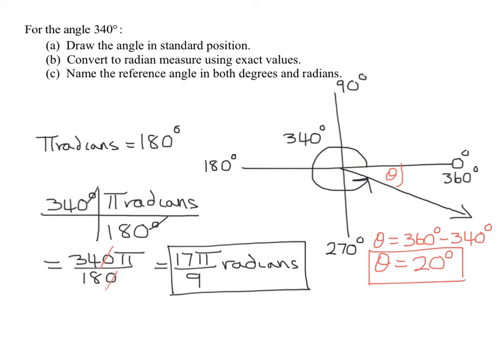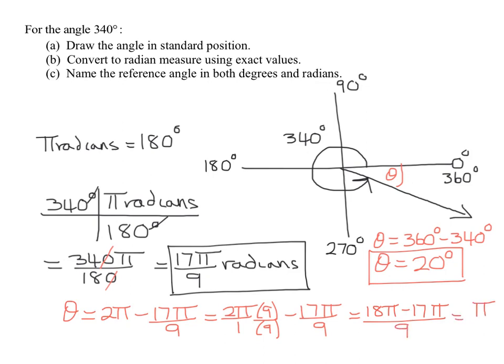And there's two different ways to find it in radians. Let's see if we can actually deal with fractions. One whole revolution is 2 pi. And we need to subtract the angle of 17 pi over 9. How are we going to do that? We need a common denominator. So we're going to have to multiply this by 9 over 9. And so I'm going to get 2 times 9 is 18 pi minus 17 pi over 9. And what's that equal to? Pi over 9.